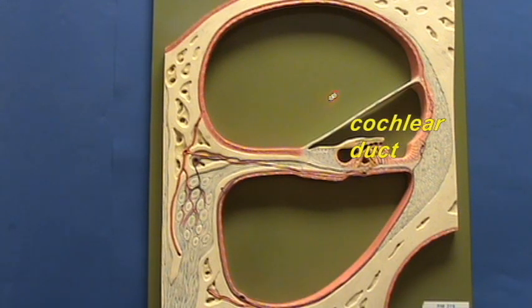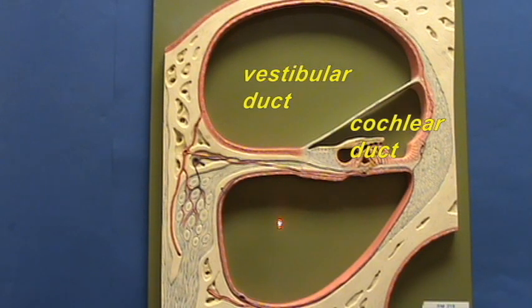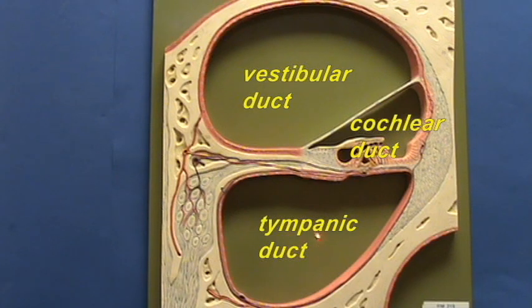Here, we have the vestibular duct. The vestibular duct contains perilymph. Down over here, we have the tympanic duct. The tympanic duct is confluent with the vestibular duct at the tip of the cochlea, and the tympanic duct also contains perilymph.